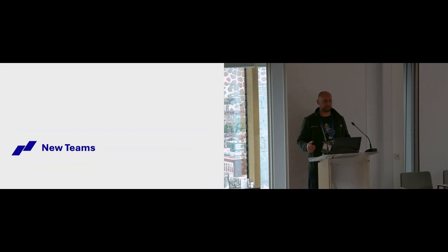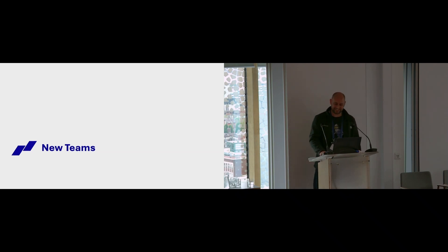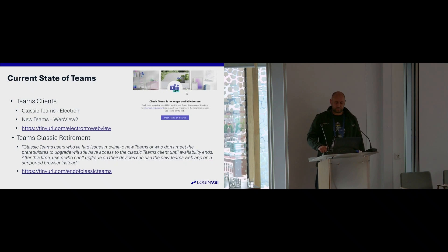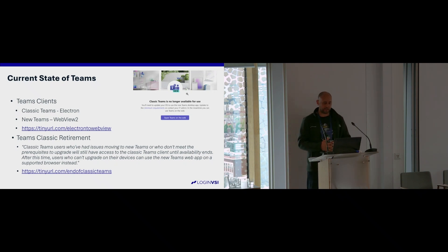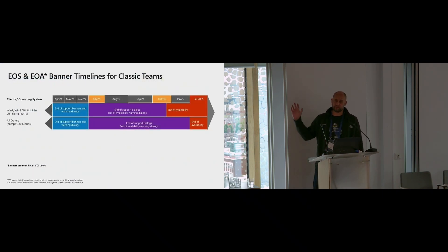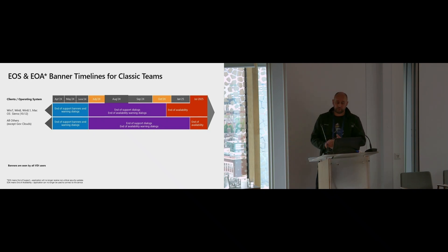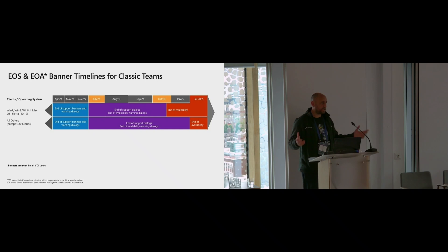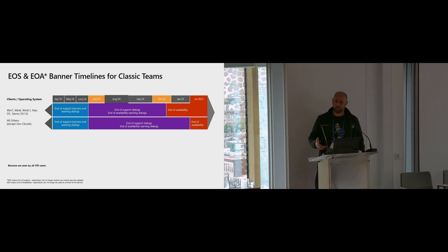I want to talk about Teams — new Teams. In case you've been living under a rock, there's a new Teams version out. It's an MSIX package. Classic Teams is being retired — what we're calling Classic Teams is the old Electron-wrapped client. This means you've got different timescales to get everything sorted by. It was originally going to be June; it's now been extended to October. You need to be on new Teams. If you're running Windows Server 2016, upgrade it — you can't run Teams v2 on Windows Server 2016. Make sure you're on a supported OS.